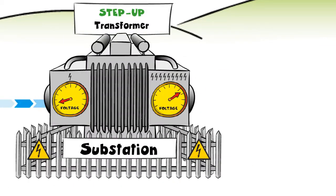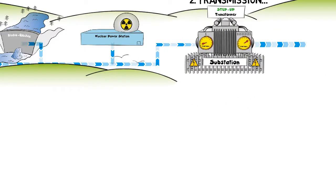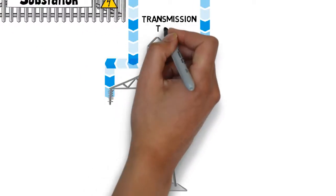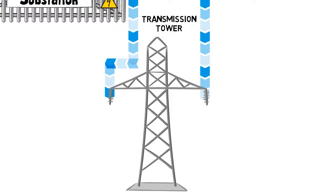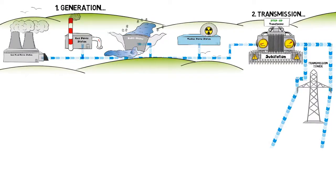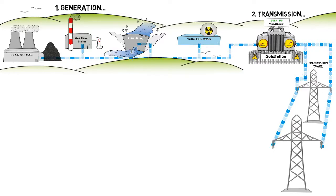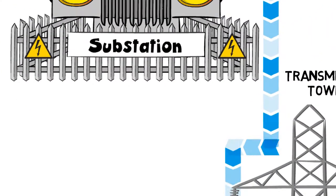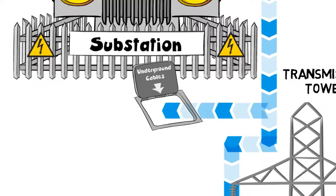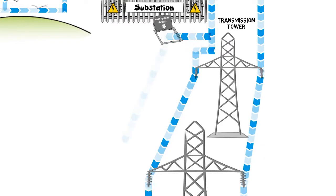Electricity is increased to voltages as high as 400,000 volts in the UK using high voltage transformers. Transformers essentially repackage electricity. This high voltage electrical power is then transmitted over long distances using high voltage transmission towers or pylons — these are the things that we drive past every day on the highway. Sometimes it's not always possible to use a pylon to transmit power, in which cases we use underground cables.